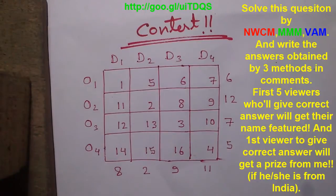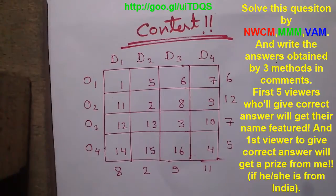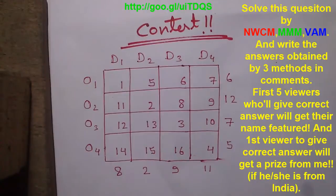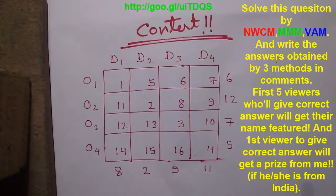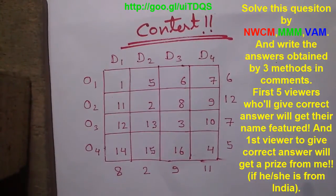Today I am going to launch a contest on operations research. This is the question for you — this is the transportation problem and you have to solve it by 3 different techniques: Northwest Corner Rule, Matrix Minimum Method, and Vogel's Approximation Method or VAM. You have to write the answers obtained by all 3 techniques in the comments below.